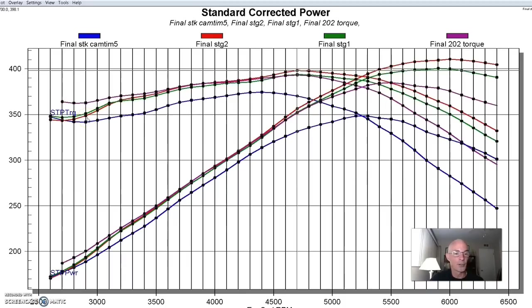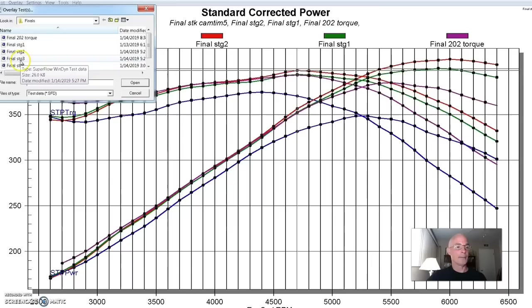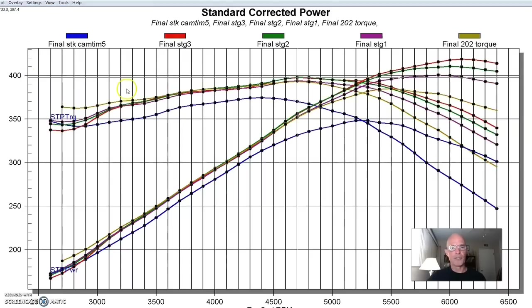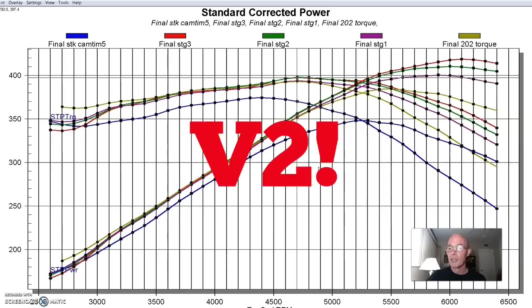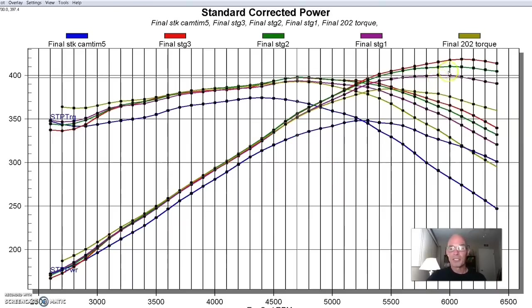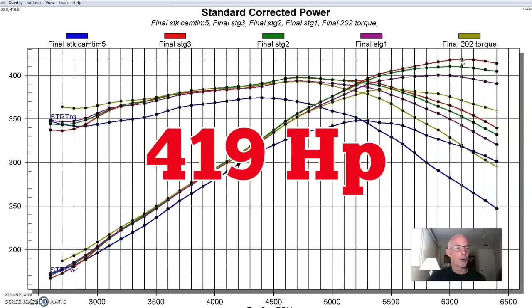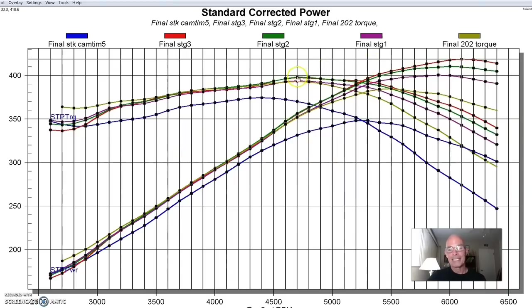But technically speaking, the stage two cam made 398 foot-pounds compared to 393. In the real world, I don't know that you would notice this difference here. You would definitely notice the difference out here. But in terms of the peak torque, they're very close. Look with that stage two cam, it made 411 horsepower. And as I said, peak torque was 398 foot-pounds. Look down here between 2,500 and 3,000. The stage two cam was definitely down compared to the torque cam.